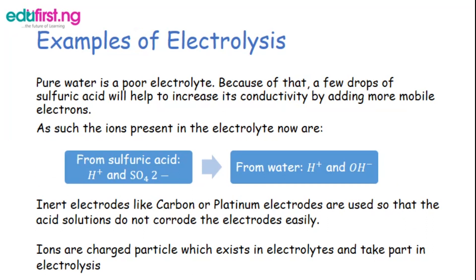Because pure water is a poor electrolyte, we add a few drops of sulfuric acid to increase its conductivity. As I mentioned in the introduction, pure water is a poor conductor, while solutions of acids, bases, and salts are good conductors.